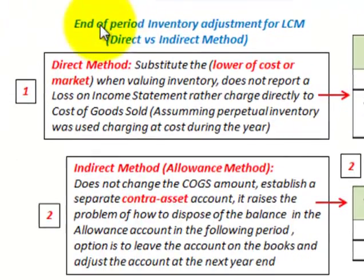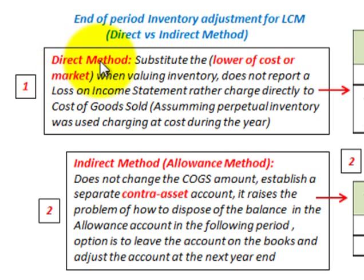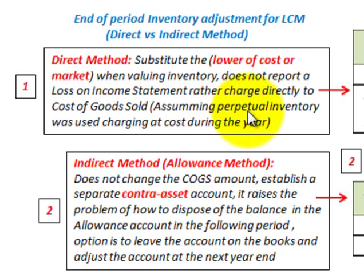We have two methods for doing the end-of-period inventory adjustment for lower of cost or market. We have either the direct method or the indirect method. The direct method is where we substitute the lower cost of market when valuating our inventory — it does not report a loss on the income statement; rather, we charge directly to cost of goods sold. We're assuming we're using a perpetual inventory system.